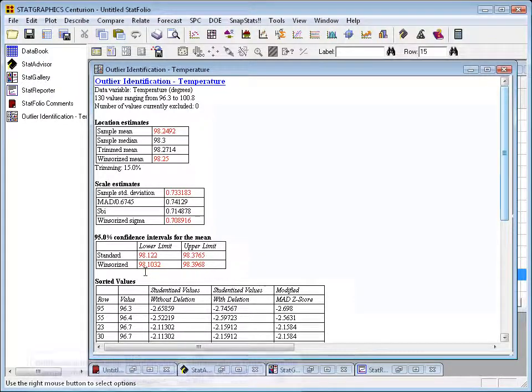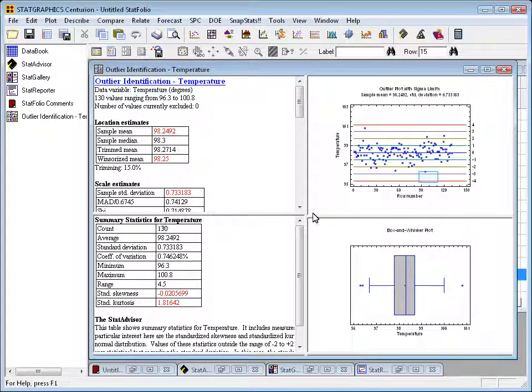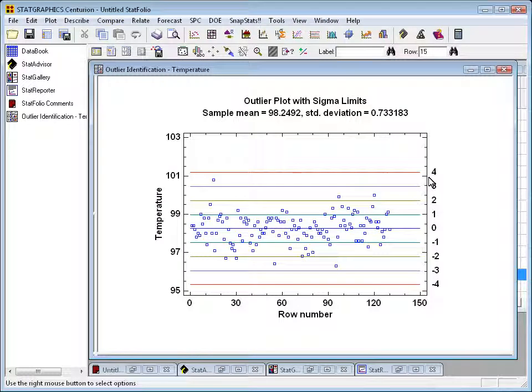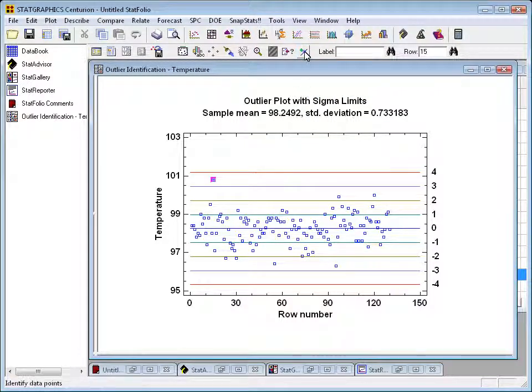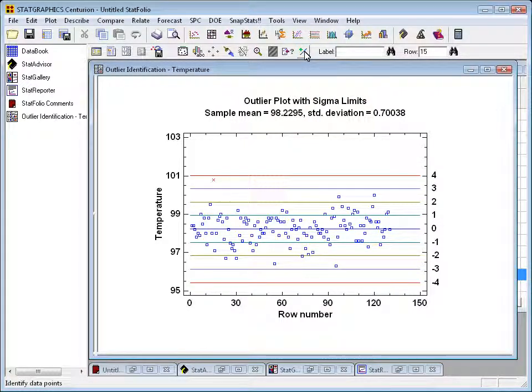Now, how do we treat that observation? What do we do with it? In StatGraphics, if you want to remove a data value, you can actually go back to the graph, click on the unusual data value, in this case row 15. Then go up to the analysis toolbar and look for the plus and minus button. If you push the plus and minus button once, that observation will be taken out and everything recalculated. I took out that observation. You can see a change in the title of the graph. The sample mean is now 98.2, and standard deviation 0.70.